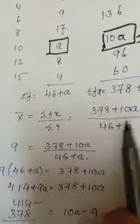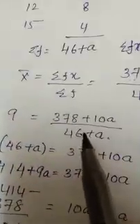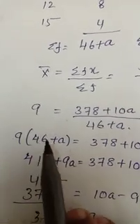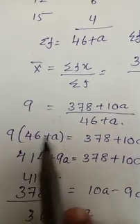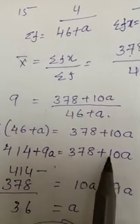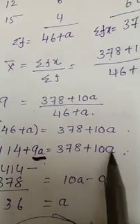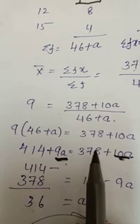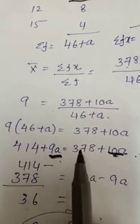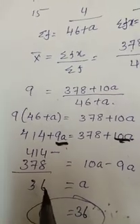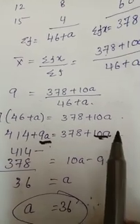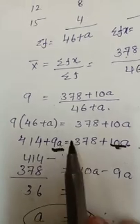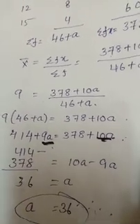Mean is already given: 9. Sigma fx divided by sigma f equals 9. Cross multiply: 46 plus a into 9 equals this. 9 into 46 equals 414 plus 9a. This is also a variable number. You can add, subtract. Number 378 you take it here, plus will become minus 36.